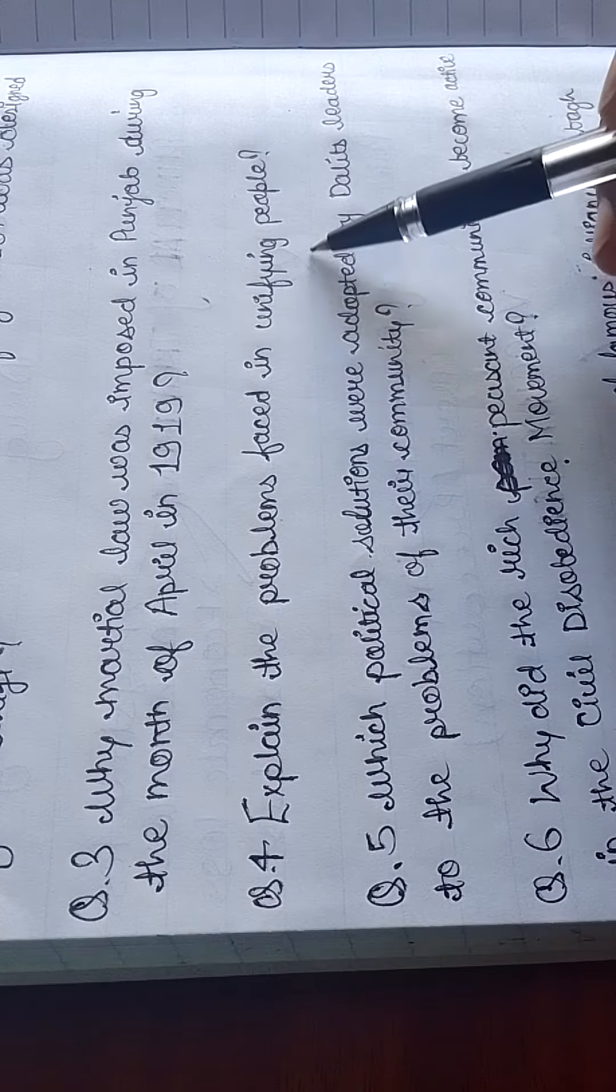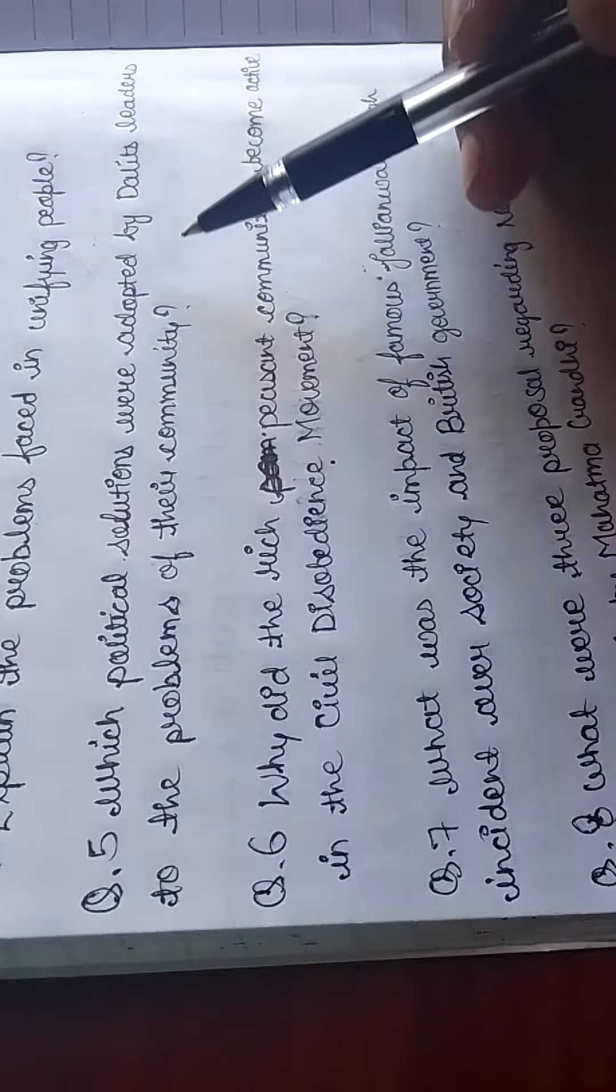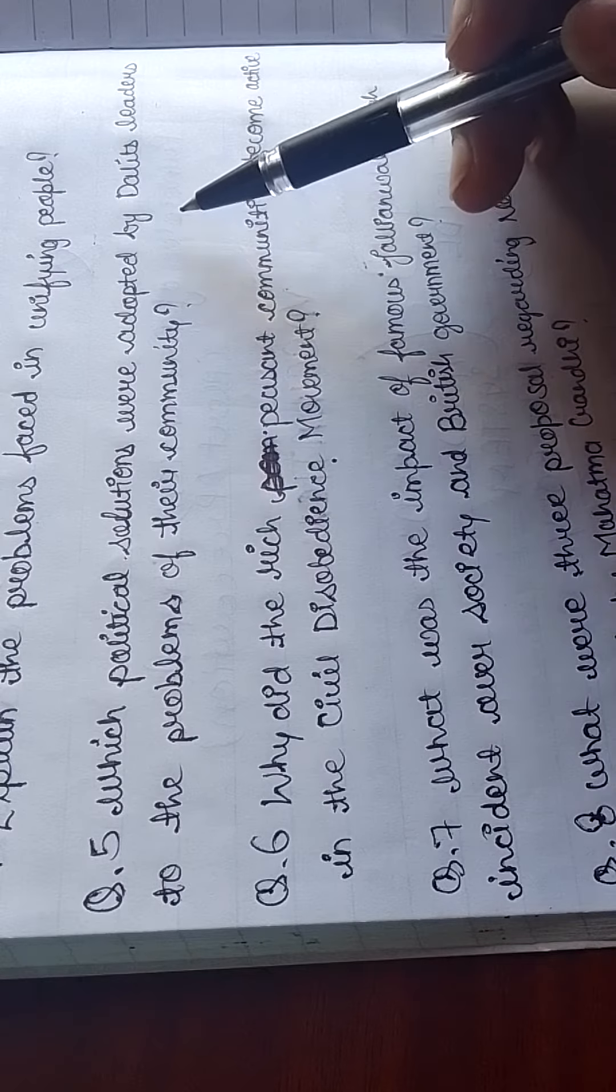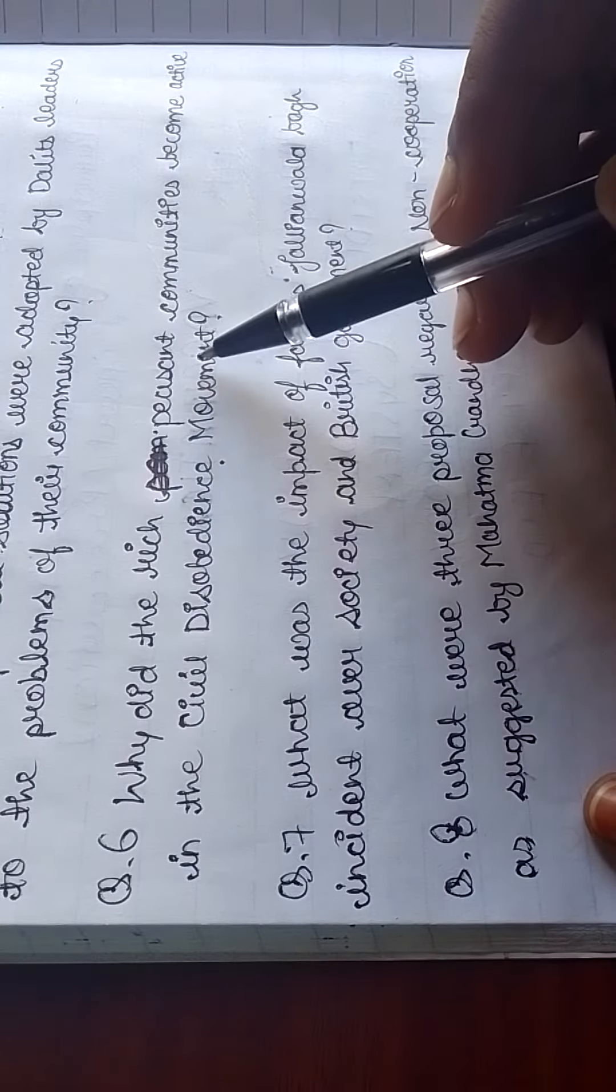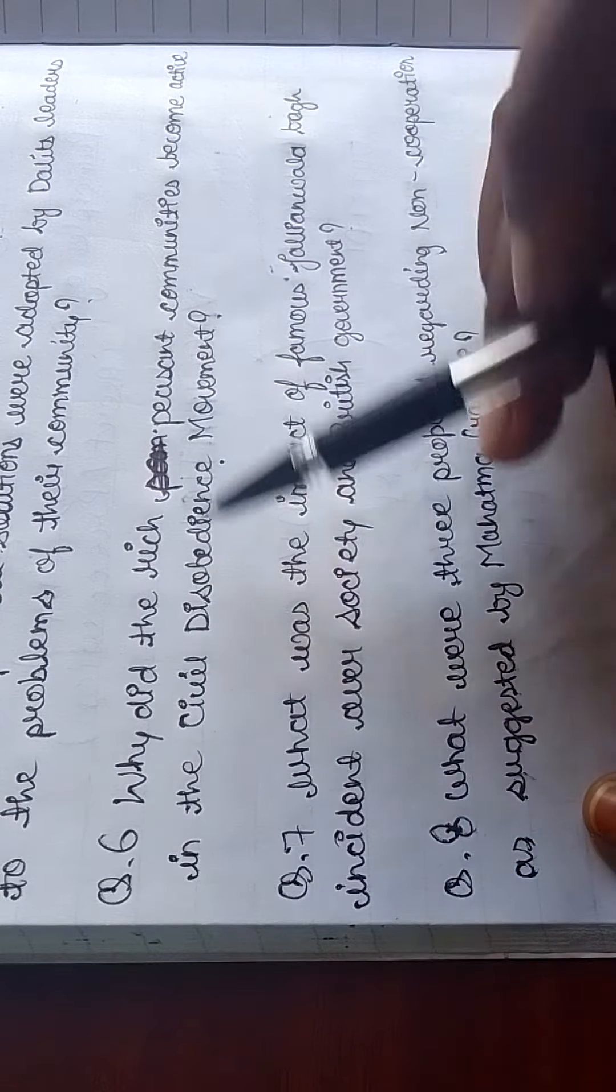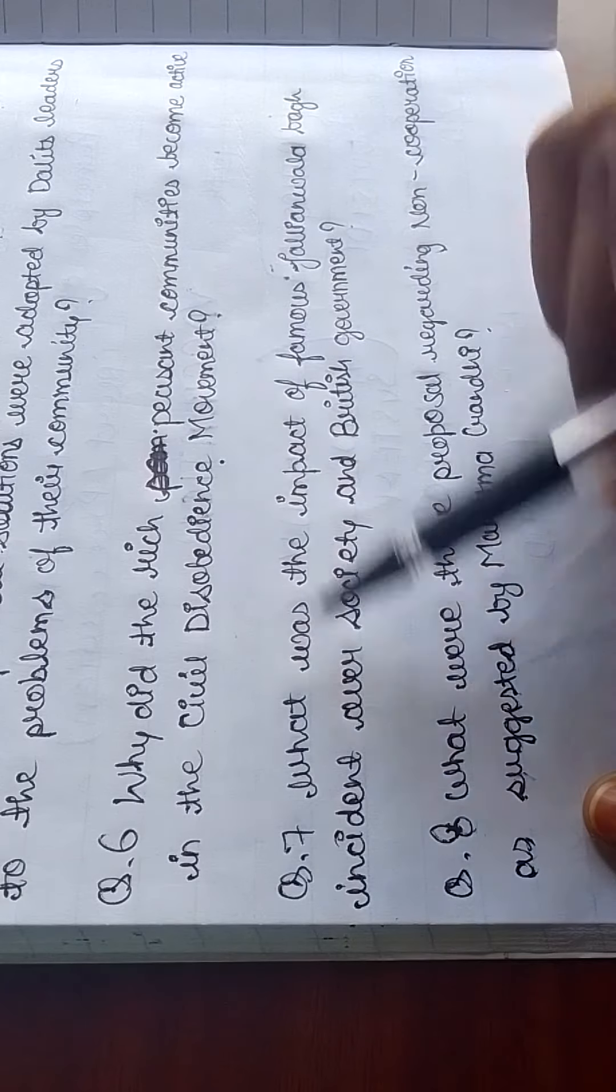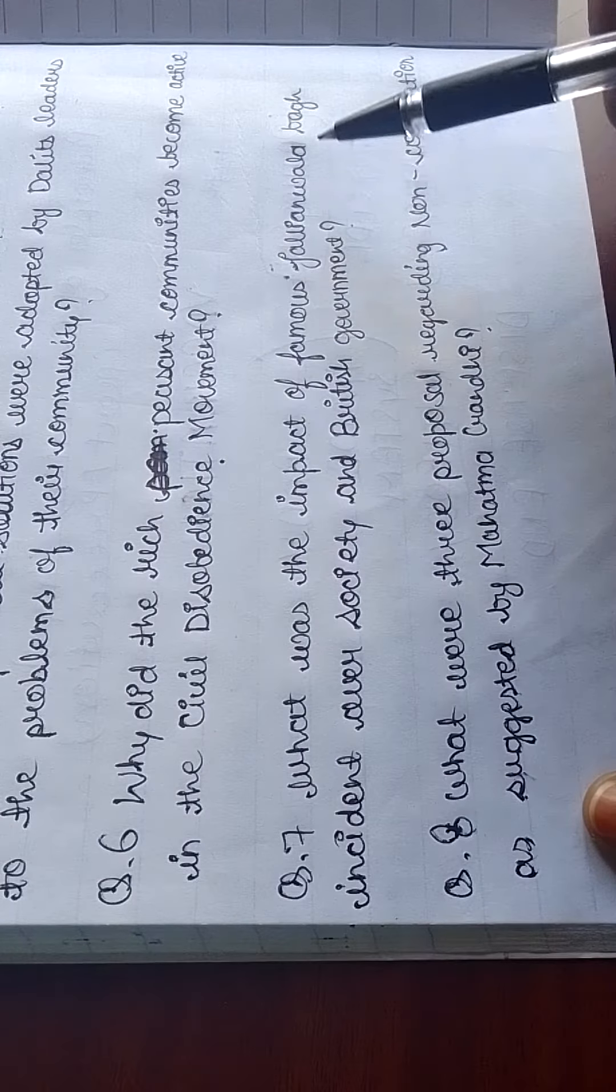Which political solutions were adopted by Dalit leaders to the problems of their community? Why did the rich peasant communities become active in the civil disobedience movement? What was the impact of famous Jallianwala Bagh incident over society and British government?